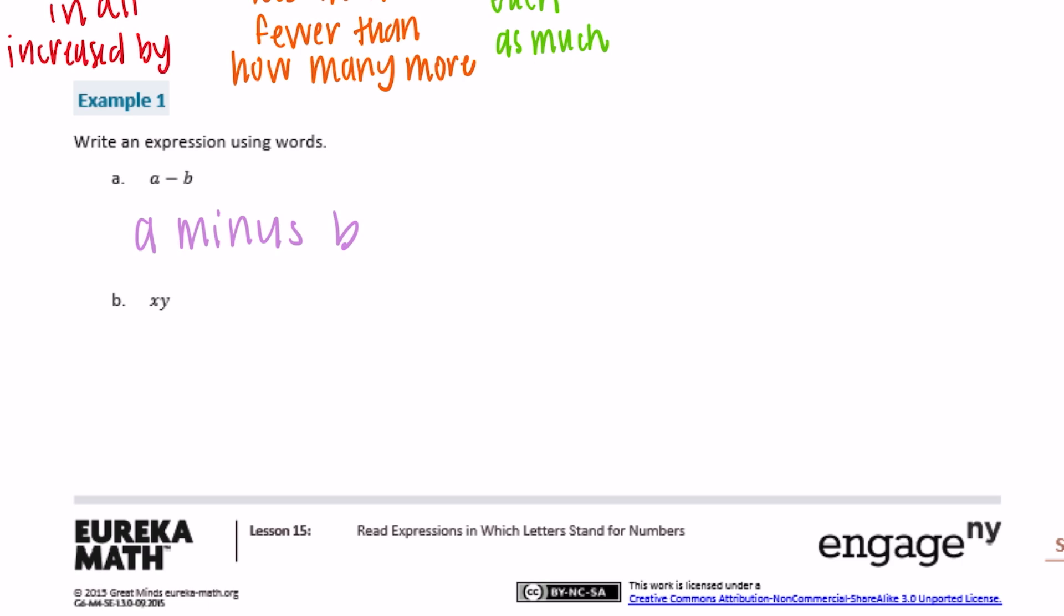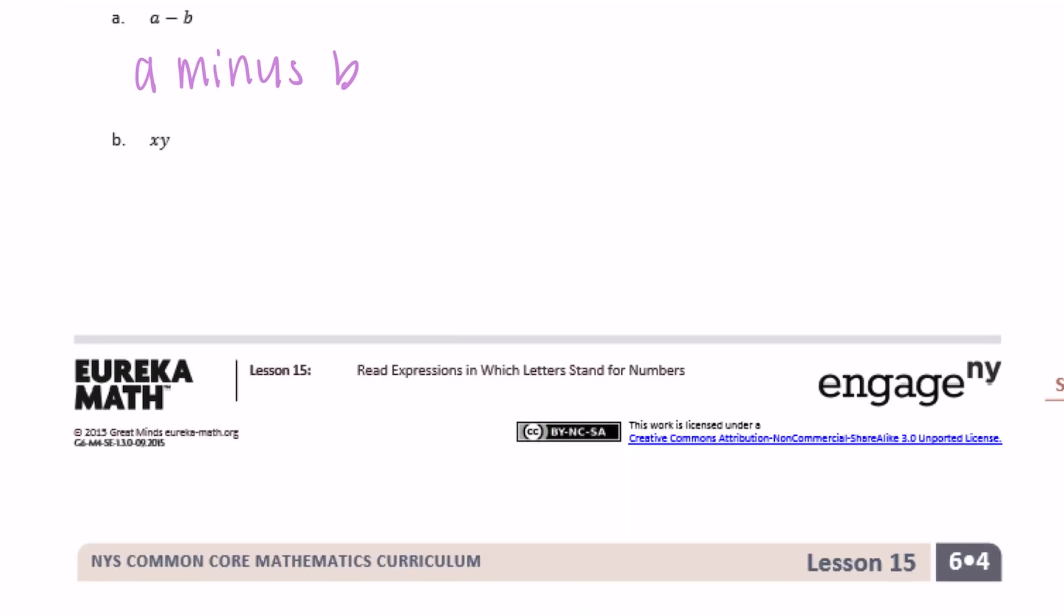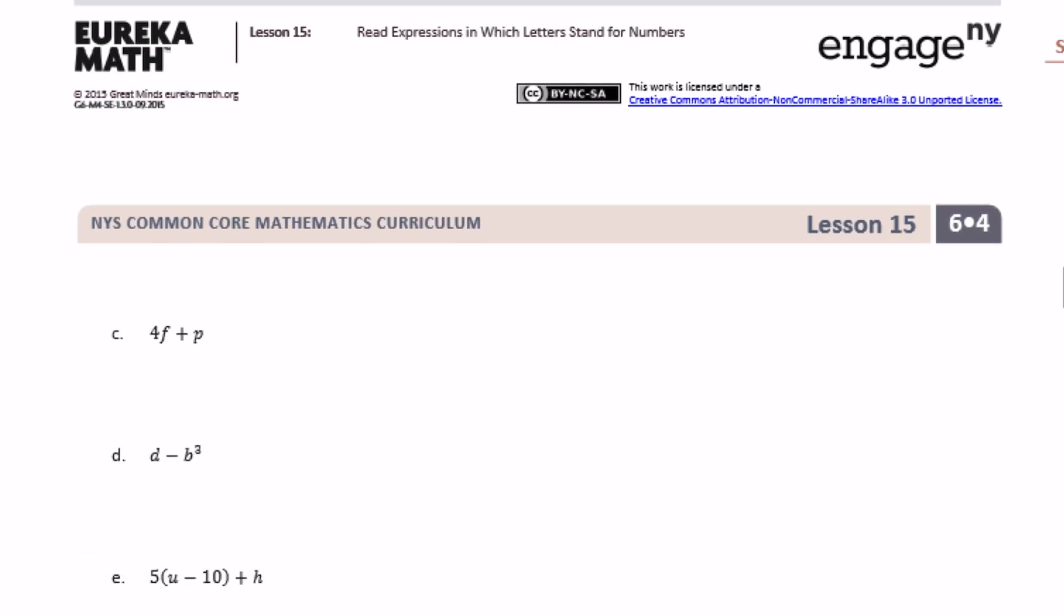So I'm just going to write down one expression, but there's a lot of different right answers for all of these. So when we see xy, that means x times y. So you could write down x times y, you could write x multiplied by y, you could say the product of x and y. I'm just going to write x times y. I'm going to try and keep these simple so I don't over complicate it.